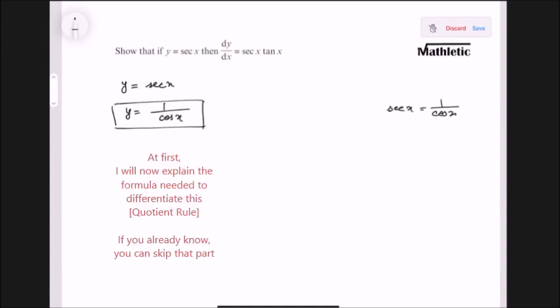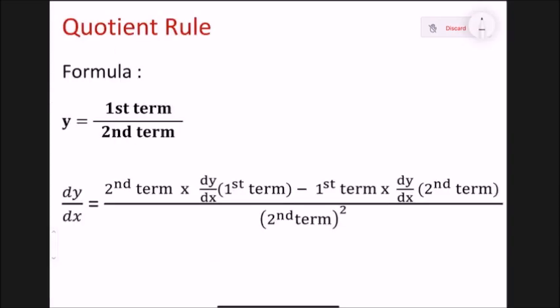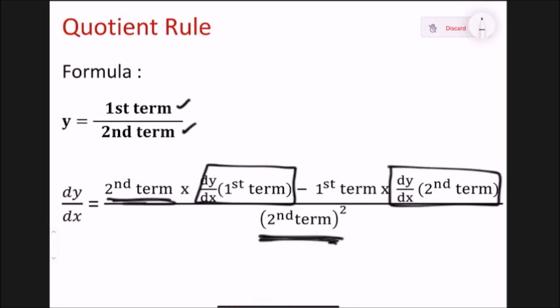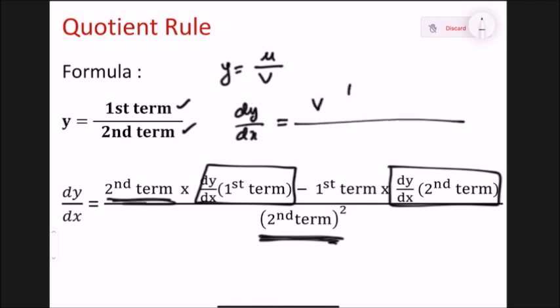This is basically the quotient rule, the u/v rule. To learn the derivations you need to know the differentiation of the division formula, which is the quotient rule. We have two terms: at the numerator we have the first term u and at the denominator we have the second term v. The formula is: v du/dx minus u dv/dx, all divided by v squared.